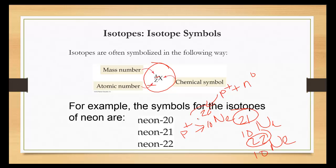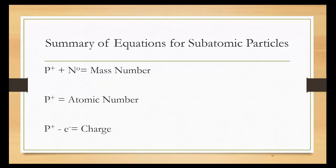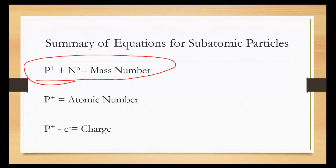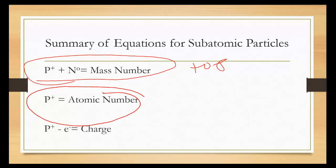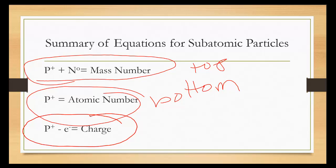Here are the equations we've discussed: protons plus neutrons equals the mass number — that's the top number. Protons equals the atomic number — that's the bottom number. And protons minus electrons equals the charge, shown in the upper right.